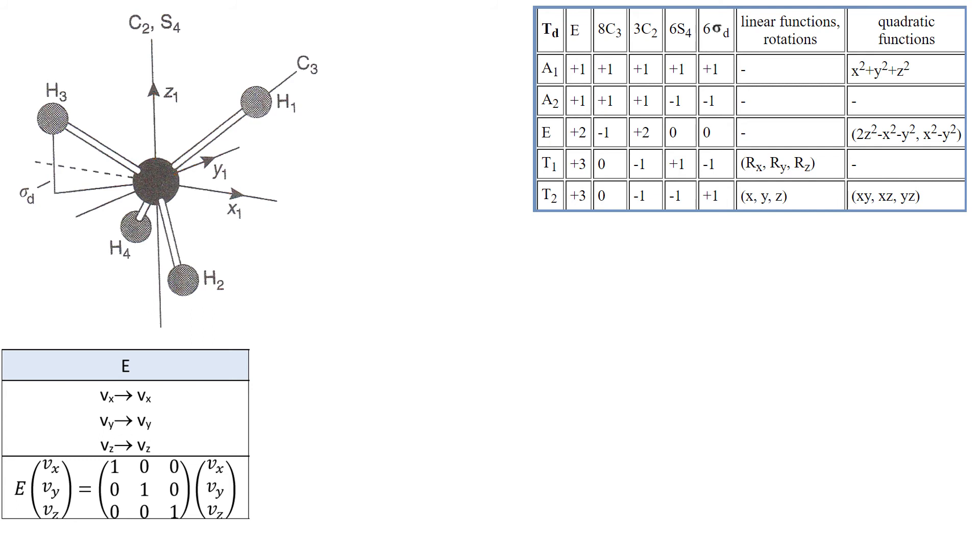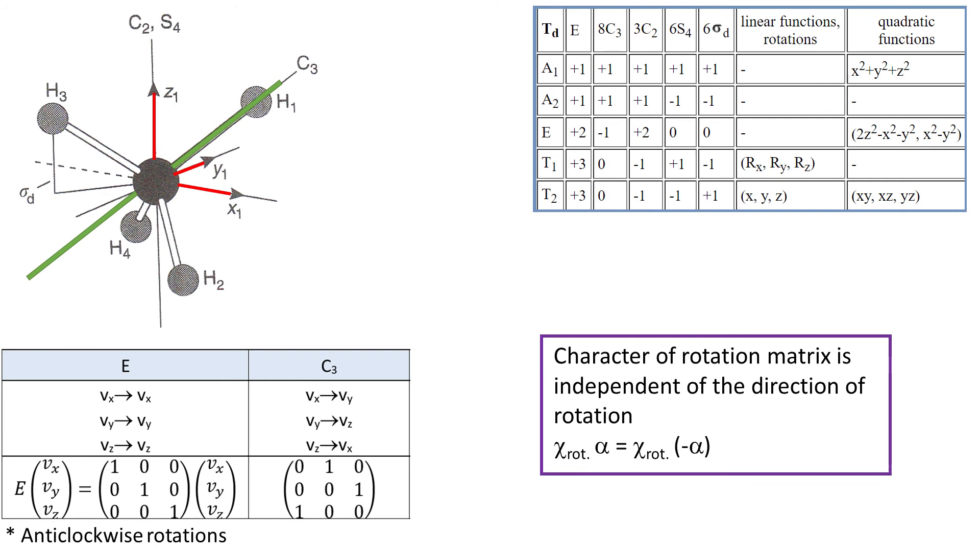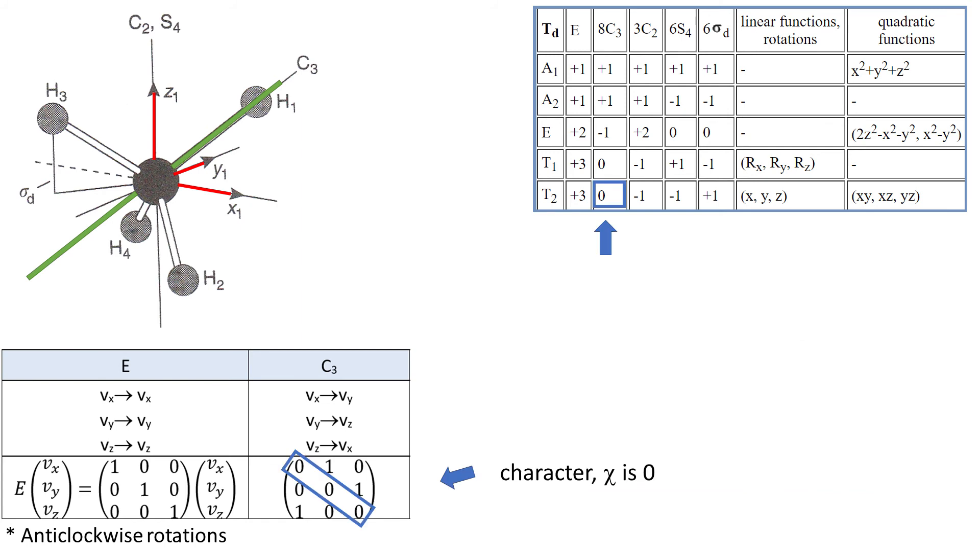For the rest of the operations, I'm only going to write the transformation matrix because I don't have enough space. So, C3. Now, in this particular case all the rotations are anticlockwise. Soon we'll learn that direction of rotation doesn't change the character, so really we can rotate however we want. The character is 0.